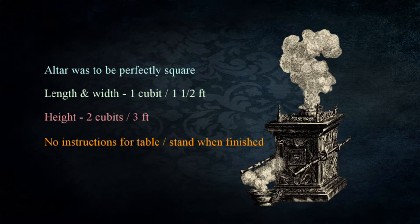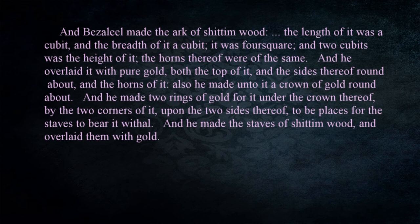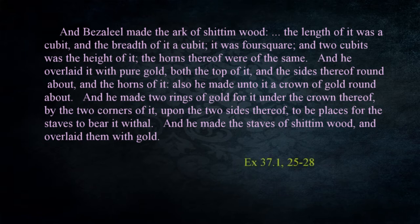In the description there are no instructions for a table to set this on or any mention of a base or stand. When the altar was finished, we have a description of how it was constructed. Speaking of Bezaleel, we read: 'He made the incense altar of shittim wood; the length of it was a cubit and the breadth of it a cubit — it was four square — and two cubits was the height of it. The horns thereof were of the same and he overlaid it with pure gold, both the top of it and the sides thereof round about, and the horns of it also. He made unto it a crown of gold round about and two rings of gold for it, and he made the staves of shittim wood and overlaid them with gold' — Exodus 37:1 and 25-28.